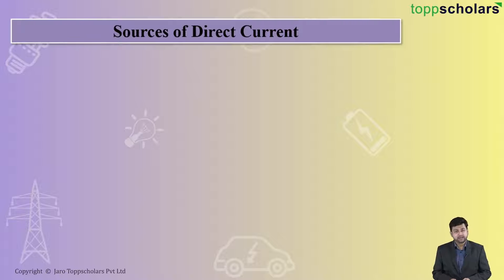Sources of direct current. Now, what exactly will you consider here? This is a battery connected to a bulb.